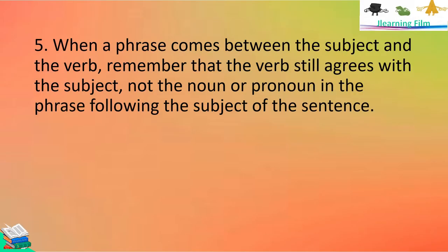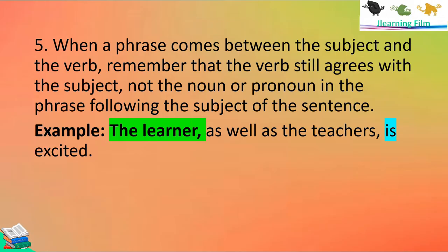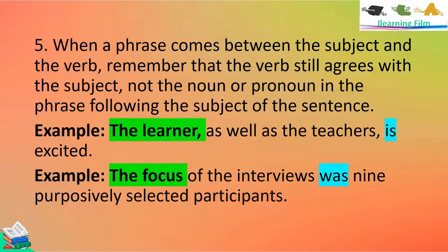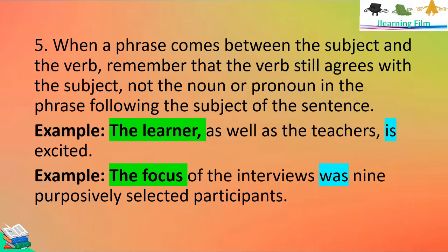Rule number five: when a phrase comes between the subject and the verb, remember that the verb still agrees with the subject, not the noun or pronoun in the phrase following the subject. For example, 'The learner, as well as the teacher, is excited.' We use 'is' because the main subject is the learner — not the teacher — which is singular, so it takes a singular verb. Another example: 'The focus of the interviews was nine purposively selected participants.' The subject is focus, which is singular, so it takes a singular verb — was.